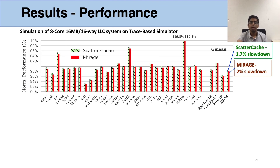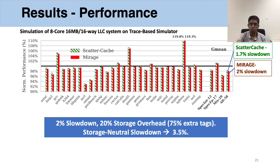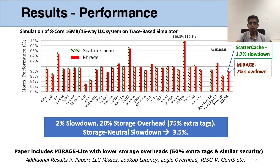We simulate an eight-core 16-megabyte LLC system using a trace-based simulator and calculate the normalized performance versus a non-secure baseline. We evaluate Mirage and ScatterCache, the previous state-of-the-art design whose security was recently broken. Overall, Mirage incurs only a 2% slowdown due to randomization, quite comparable to ScatterCache's 1.7% slowdown. Mirage requires an additional 20% storage due to extra tags, but a storage-neutral evaluation shows Mirage is only 3.5% slower compared to a non-secure design with similar storage and higher capacity. We also show a Mirage Light design that reduces storage overhead while retaining a permissible level of security, and provide additional results including LLC misses, lookup latency, logic overhead, and RISC-V and GEM5 implementations.